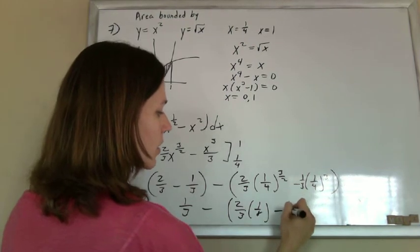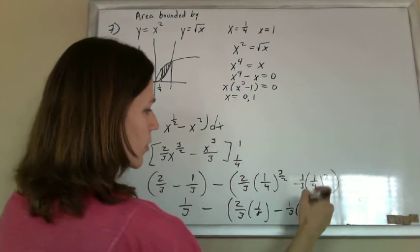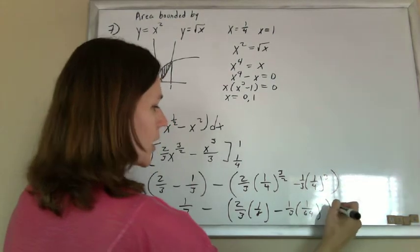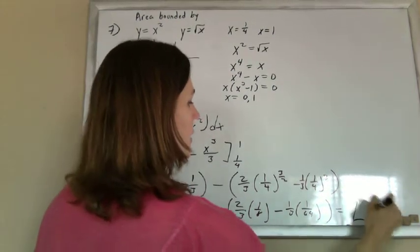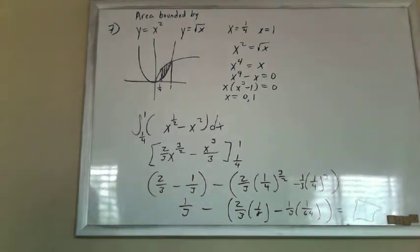And here, this is just one-fourth cubed, so that's one over sixty-four. And I'm going to let you work that out to get some lovely answer that the book will tell me.